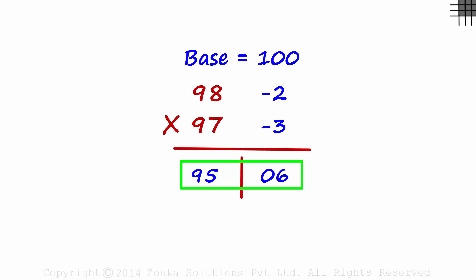And there's just one thing we need to keep in mind here. The number of digits on the right will be equal to the number of zeros in the base. But what if both the numbers were above the base?